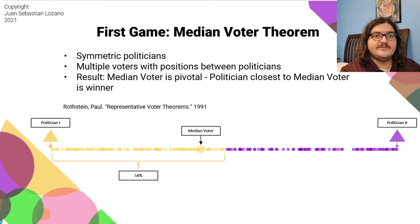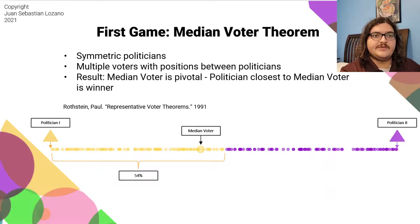Our first game that we look at is a classic: the median voter theorem. We take two politicians who prefer extreme policies on opposite sides of a simple political spectrum. Voters are between politicians and their policy preferences. The politicians announce their platforms and voters vote. Voters are rewarded by the difference between their ideal policy and the policy of the winner. The result is the median voter is pivotal, meaning the politician who is closest to the median voter wins. In our case here, we can see that the yellow politician is closest to the median voter and they win with 54% of the vote.